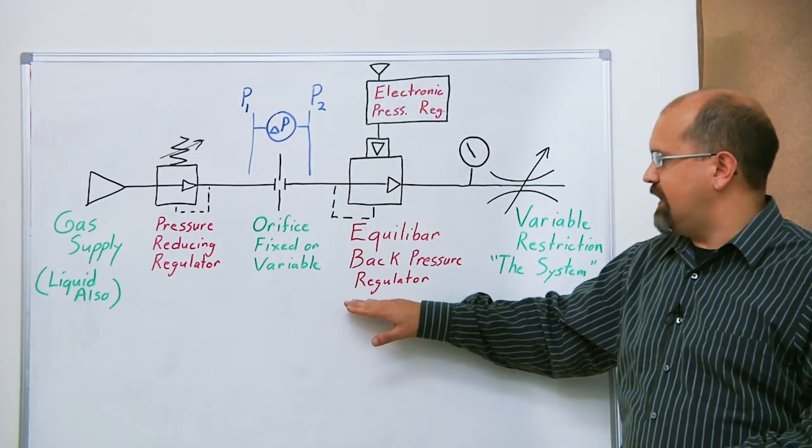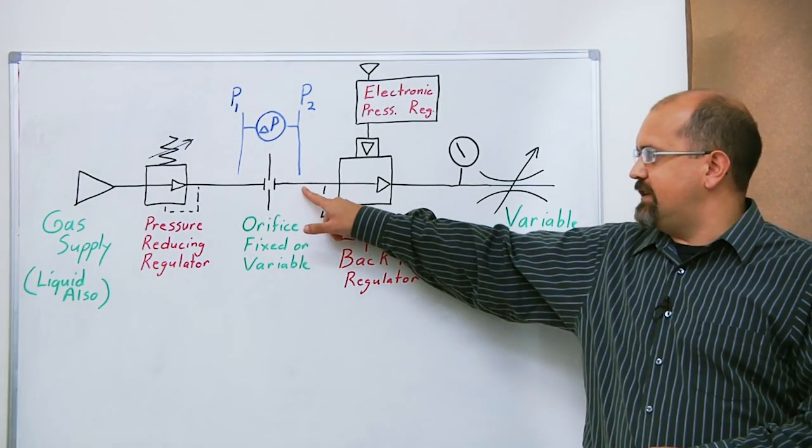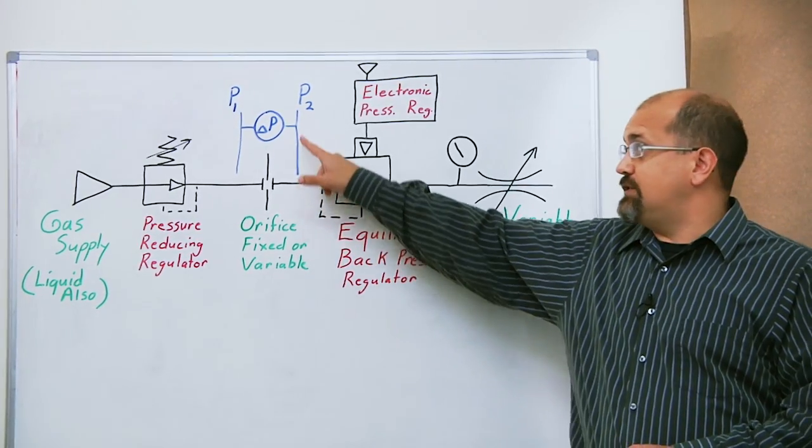The next item, we're using an Equilibar back pressure regulator. The back pressure regulator is going to set the upstream pressure, which is P2.